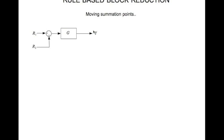For this movement to be correct the ultimate output y should not change. Here this output is g times r1 minus r2. So if I move the summation junction here the output should still be the same. Now let's look at what we need to do.